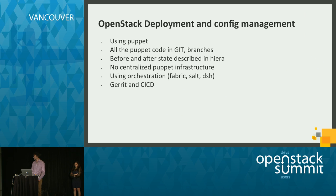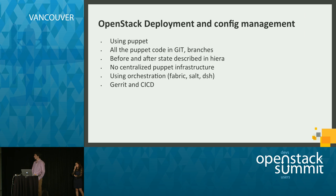One thing we're doing differently is we're not using Puppet infrastructure with servers. We started using a masterless Puppet setup with orchestration. One of the main advantages of doing this was that it allowed us to run Puppet code on hundreds of compute nodes at the same time. Part of this upgrade, at some point, we had to run Puppet on 600 boxes simultaneously, and that happened very quickly. There was no load problem on Puppet infrastructure, because there is no Puppet infrastructure.